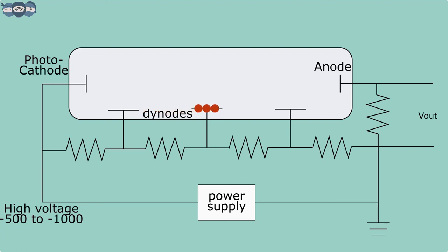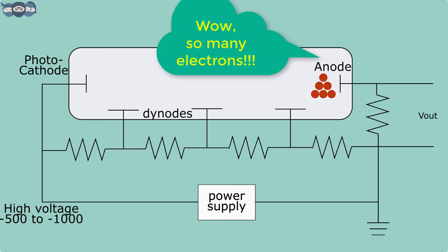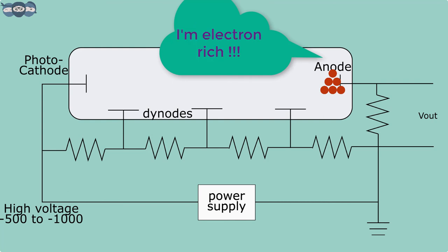When this photoelectron hits the dynodes, additional electrons are generated at each of these dynodes. Due to multiple dynodes, around 10,000 to 10 million electrons are created for each photoelectron that ejects from the photocathode.